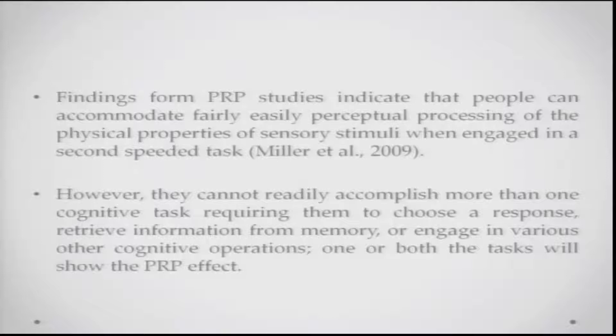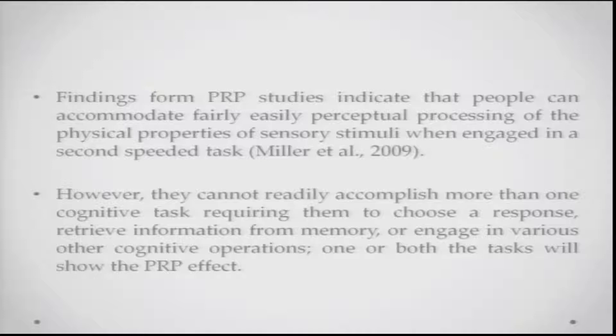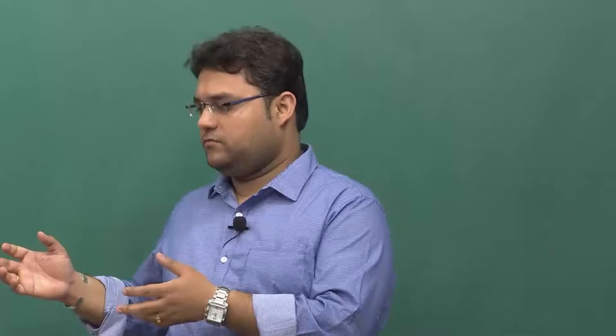Findings from these PRP studies indicate that people can accommodate fairly easy perceptual processing of physical properties or sensory stimuli when engaged in a second speeded task, and with practice can do that. However, they cannot readily accomplish more than one cognitive task requiring them to choose a response, retrieve information from memory, or engage in various other cognitive operations at the same time. One or both tasks will generally show the PRP effect — a characteristic slowing down and possibly a fall in accuracy as well.